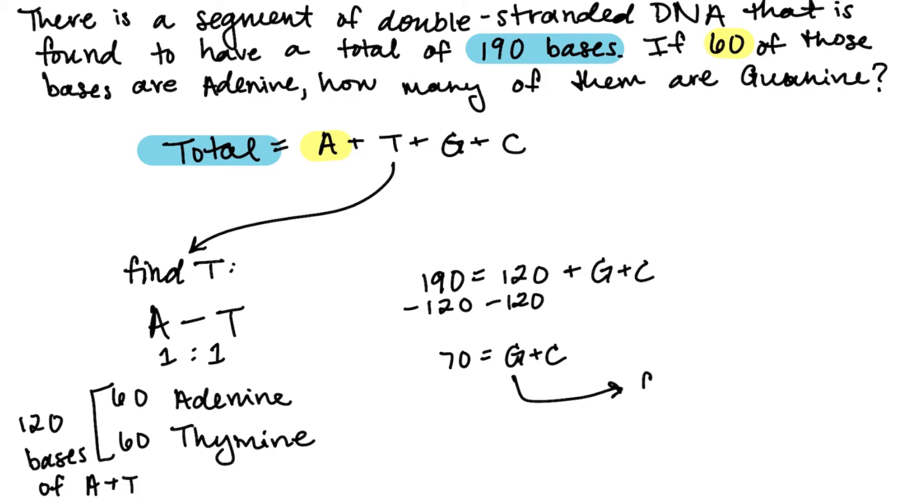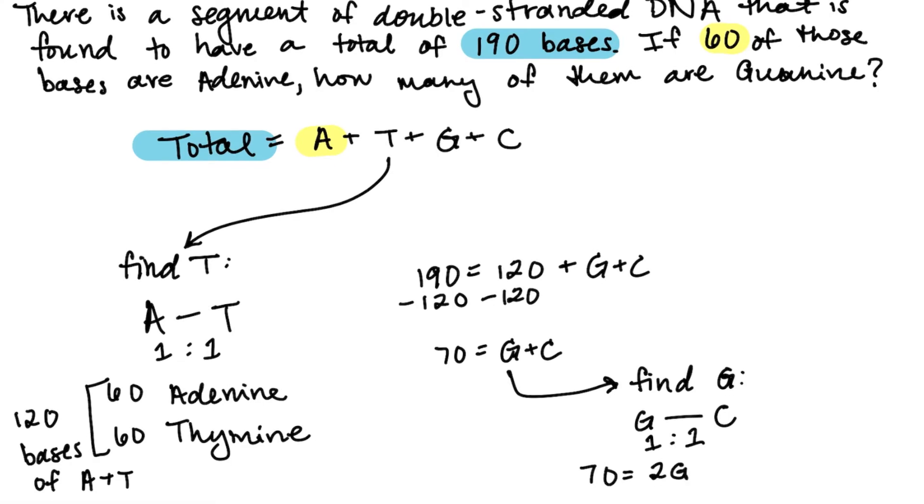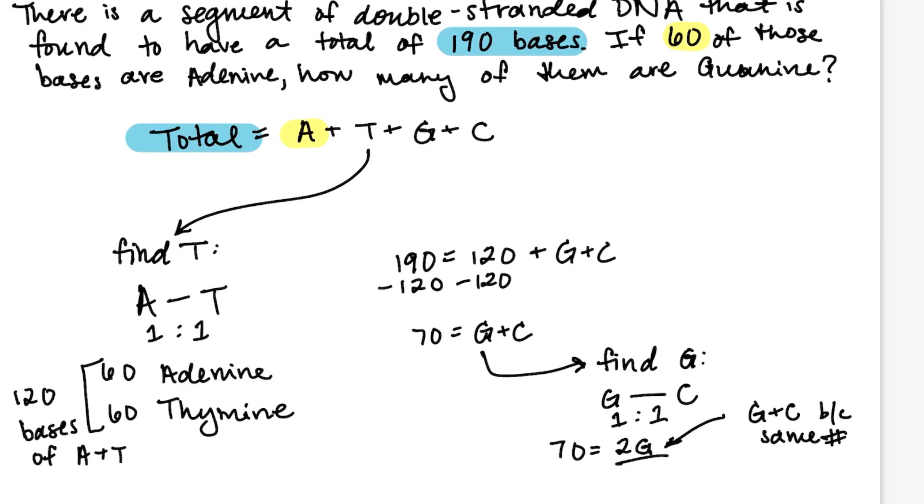In order to find the number of guanine, you can use the same complementary pairing principle that there's a one-to-one ratio of G to C. In other words, the number of guanine will equal the number of cytosine. We can write that as 2G because they equal each other. Then divide by two and you'll get that the number of guanine equals 35.